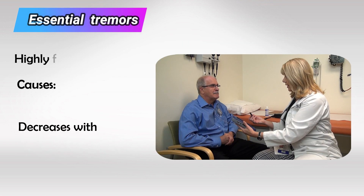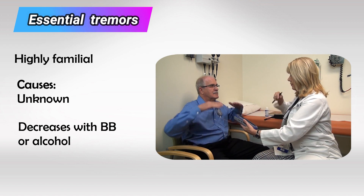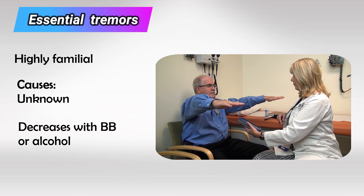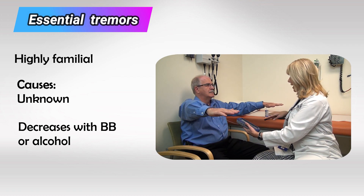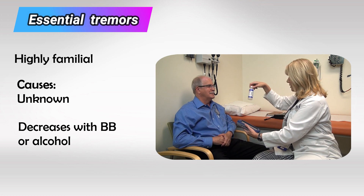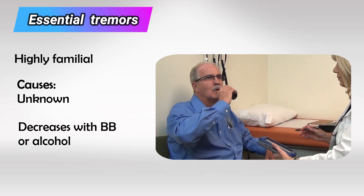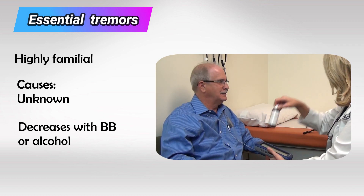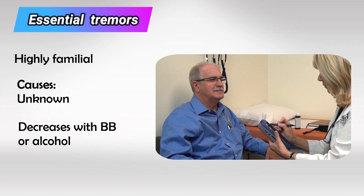Next we have tremors, which can be subdivided into essential, resting, and intentional. Essential tremor is highly familial and family history is almost confirmative. It occurs mainly when somebody tries to change their posture, and interestingly it decreases with alcohol intake or beta blockers.